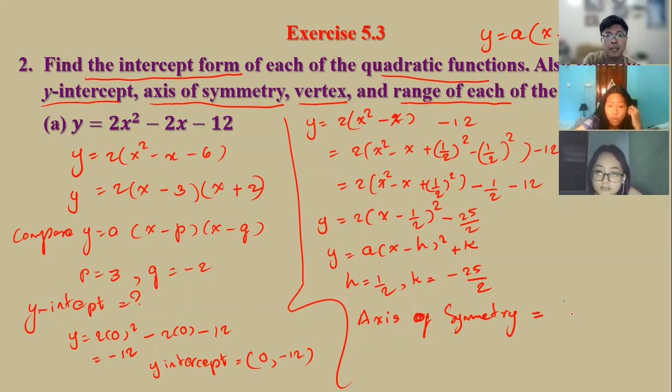And x equal to h equal to 1 by 2, this is the axis of symmetry. Then what this cuts are is 1 by 2, minus 25 by 2.